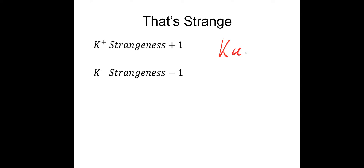One more thing: K plus mesons have strangeness of plus 1, and K minus have strangeness of minus 1. These are both K-mesons, or kaons. This is important when we apply our conservation rules.